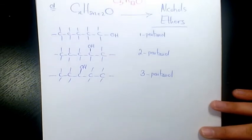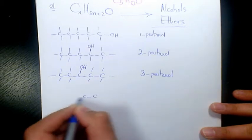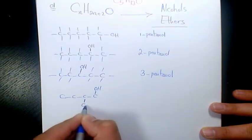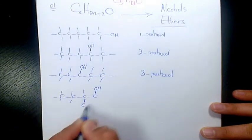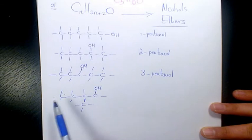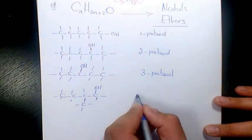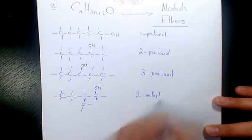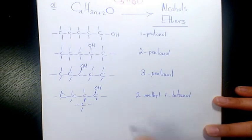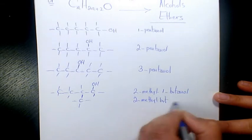Now let's see branches. We have 4 carbons on the main branch — 1, 2, 3, 4 — and we have one OH group and a methyl group, so we count 12 hydrogens. That will be 2-methyl-1-butanol.